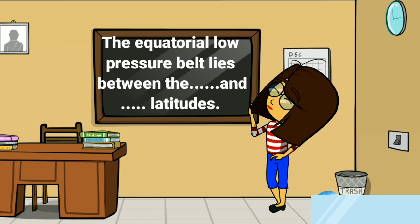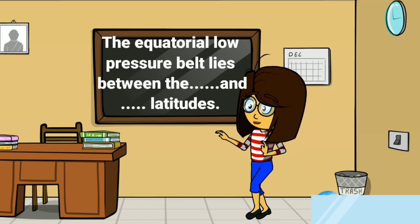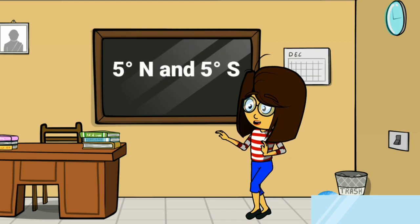The fourth question is: the equatorial low pressure belt lies between the dash and dash latitude. The equatorial low pressure belt is a permanent belt and it lies between 5 degree N and 5 degree S latitudes. So the answer is 5 degree N and 5 degree S.